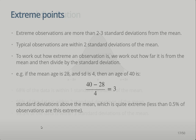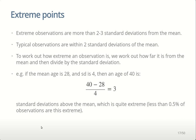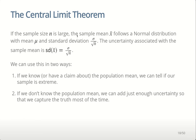This is the central limit theorem, describing that distribution. If the sample size is large, the sample mean follows a normal distribution centered on the population mean, with standard deviation equal to the population standard deviation divided by the square root of the sample size. We can use this in two ways: if we know or have a claim about a population mean, we can compare our sample to that claim and assess whether it's extreme; or if we don't know the population mean, we can take our sample mean and add just enough uncertainty to capture the truth most of the time. The first process is hypothesis testing; the second is confidence intervals.